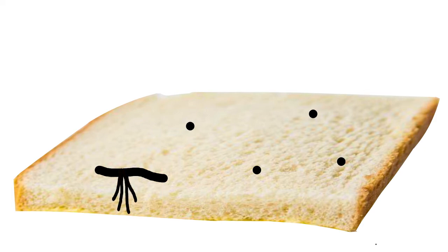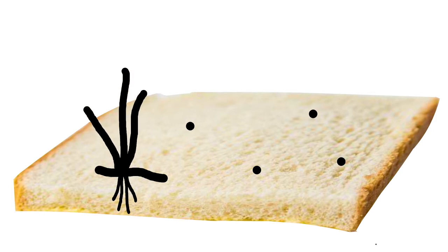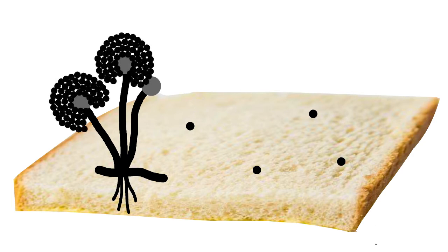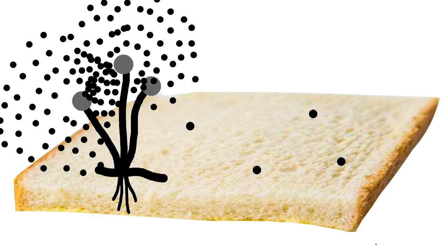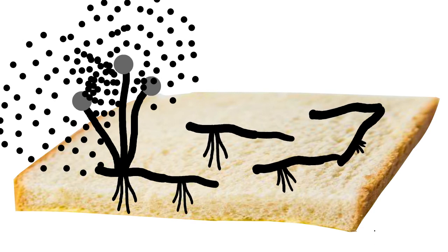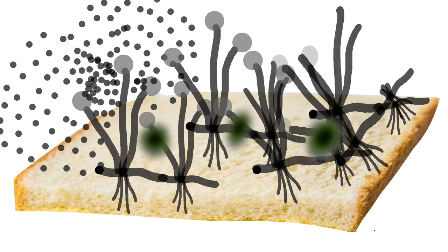The mold produces aerial hyphae called sporangiophores. These sporangiophores produce a bulb at the tip called sporangia. Numerous spores are produced inside these sporangia which are released into the surroundings at their maturity. The process continues and the whole process takes about five to seven days. This eventually spoils the bread making it unfit for consumption.